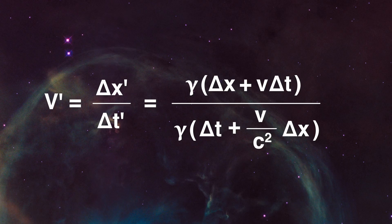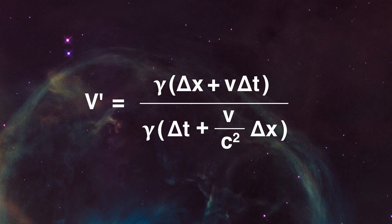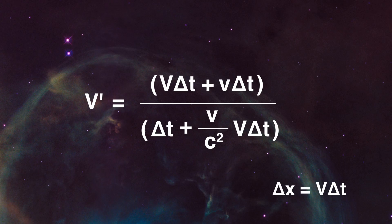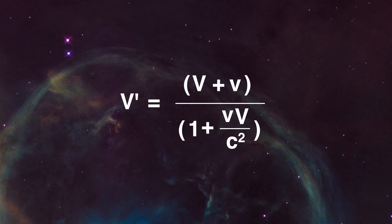So we can substitute in the Lorentz transforms for the primes and we get this ugly looking thing here in terms of unprimed quantities. But now it's just some simple algebra to get us the rest of the way. We can cancel the gammas, which helps. We can also remember that equations we had for delta x, which was just big V times delta t and substitute that in. We can then pull out the delta t's and cancel them too. And finally, we are just left with the answer, which we can see here.